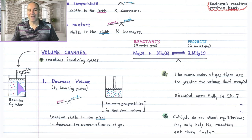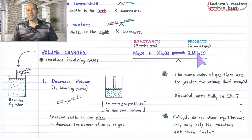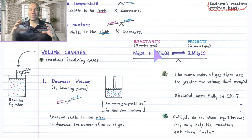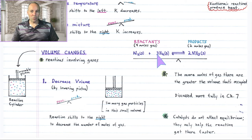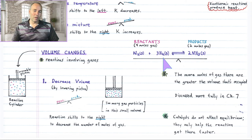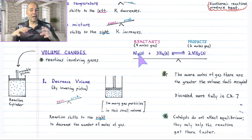Here's your gas phase reaction inside of a chamber, and we're going to change the volume. For our reaction, nitrogen reacts with hydrogen to produce ammonia. Something we'll learn in the next chapter is that the more moles of gas there are, the larger the volume they occupy. Reading this chemical equation: one mole of nitrogen gas reacts with three moles of hydrogen gas — that's four moles total on the reactant side — and the products are only two moles of ammonia gas. So you have more gas moles on the reactant side versus the product side. Four moles of gas occupies more volume than two moles of gas.